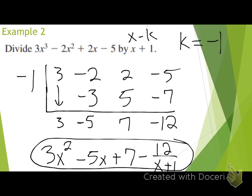Now if your dividend started as 3x to the 4th, then your answer would start off as x cubed — it's just decreasing by 1. So if it started as x to the 5th, your answer would be x to the 4th, and so on. We're just dividing that first term by x, so it just decreases the exponent by 1. It just so happened that all our examples have x cubed that we're starting off with, so I wanted to make that clear.